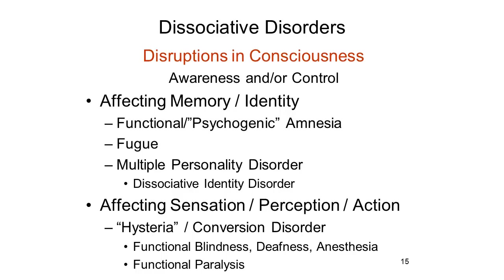In dissociative amnesia, also sometimes known as functional amnesia or psychogenic amnesia, the patient experiences a loss of autobiographical memory, but this amnesia occurs in the absence of any demonstrable brain insult, injury, or disease. In fugue, also known as psychogenic fugue or dissociative fugue, there's an amnesia but the patient also loses his or her identity—forgets who he or she is. The patient may even take up another identity and sometimes moves to a new location, hence the name fugue, for flight.